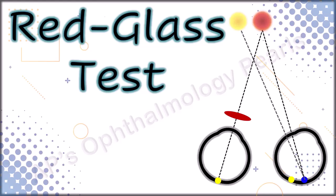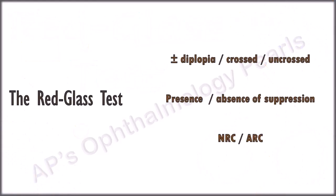The red glass test is useful for identifying the presence of diplopia and its types, suppression, normal and anomalous retinal correspondence.